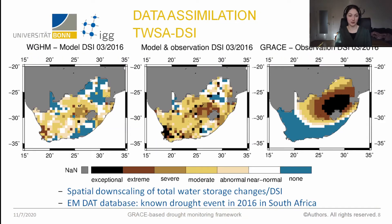On the left you have the model, on the right you have the observations, and in between you have the data assimilation — all shown for South Africa. You can clearly see that we can downscale GRACE. We have a higher spatial resolution and higher intensities close to Lesotho, for example, compared to the model. We get a different and more realistic insight of drought here compared to GRACE, and we can find some supporting evidence in the literature.